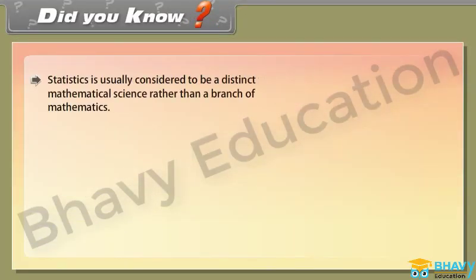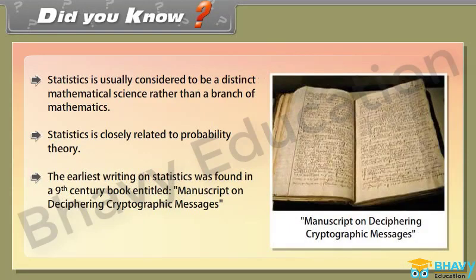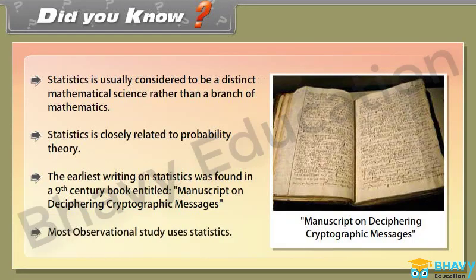Did you know? Statistics is usually considered to be a distinct mathematical science rather than a branch of mathematics. Statistics is closely related to probability theory. The earliest writing on statistics was found in a 9th century book entitled 'Manuscript on Deciphering Cryptographic Messages'. Most observational studies use statistics.